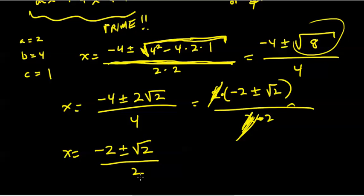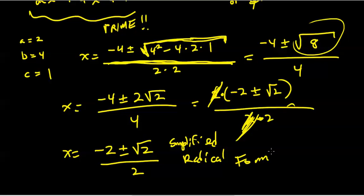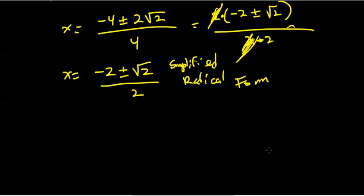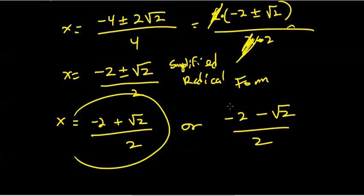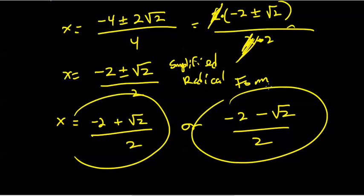What we can do is simplify the radicand. The square root of 8, as in Section 7.3, reduces to 2 times the square root of 2. Now I see a common factor of 2 across this fraction. If I factor out a 2 from the numerator and break down 4 as 2 times 2, I've got common factors I can cancel. Those 2s cancel out, giving x equals minus 2 plus or minus the square root of 2, over 2. This represents two solutions in simplified radical form — x equals minus 2 plus root 2 over 2, or x equals minus 2 minus root 2 over 2.